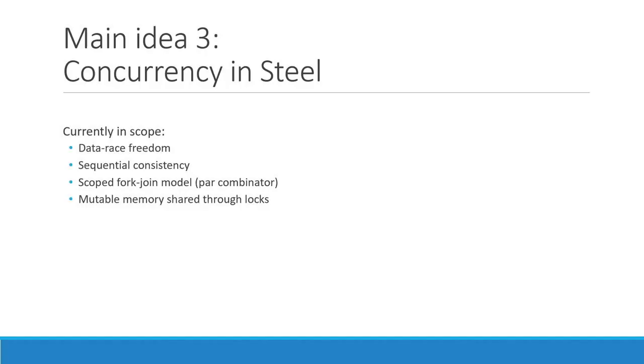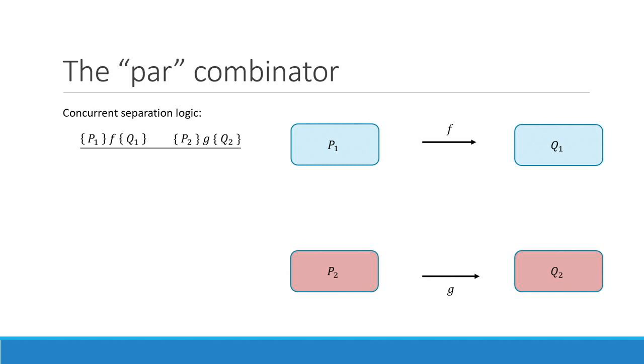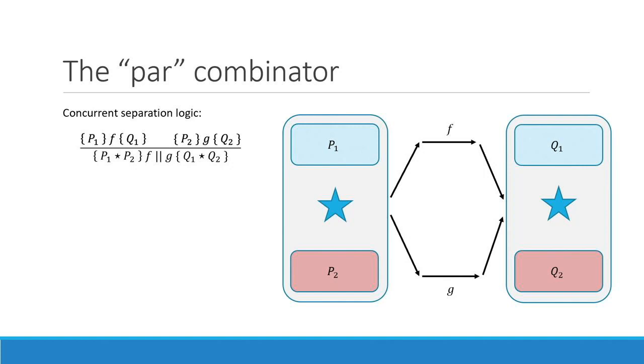The last main concept of Steel is how we handle concurrency — how do we implement and verify concurrent programs? Our target is to prove that programs are data-race-free, assuming a sequentially consistent model. We focus on a simple scoped fork-join model with a par combinator, and we share mutable memory using locks. Steel is heavily inspired from separation logic, which has a standard extension called concurrent separation logic. The idea: if you have two functions F and G that work on different heap fragments, you can execute them in parallel — assuming the different heap fragments are actually separated.